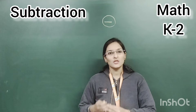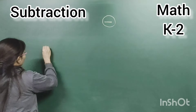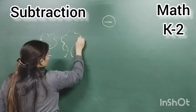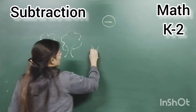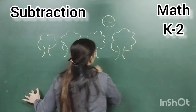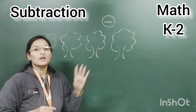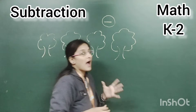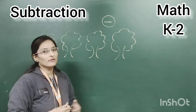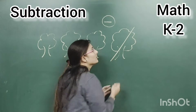Subtraction means to take away or to reduce the given number. For example, see here. Count the trees with me: one, two, three, four. How many trees are here? Four. Now, if rain falls heavily — very heavily — what happens? Suppose one tree will fall on the ground.